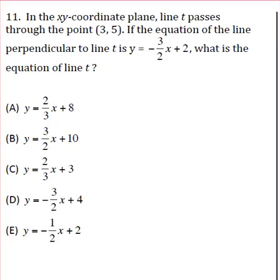This question says in the XY coordinate plane, line t passes through the point (3, 5). If the equation of the line perpendicular to line t is y = -3/2x + 2, what is the equation of line t?